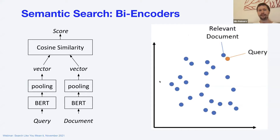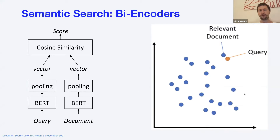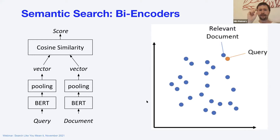Dave will later talk about different similarity measures to find close entries in the vector space. As we've seen, when you enter a question like 'What's the capital of the United States,' you look in the vector space, find the closest Wikipedia page, and get a good answer to your query.